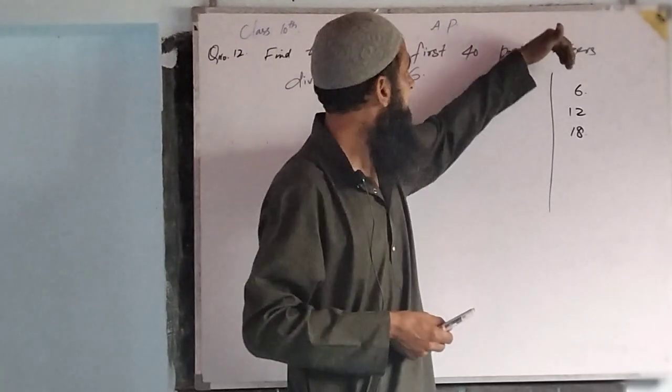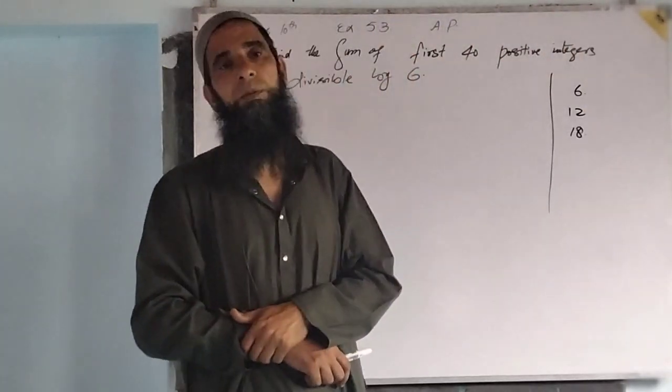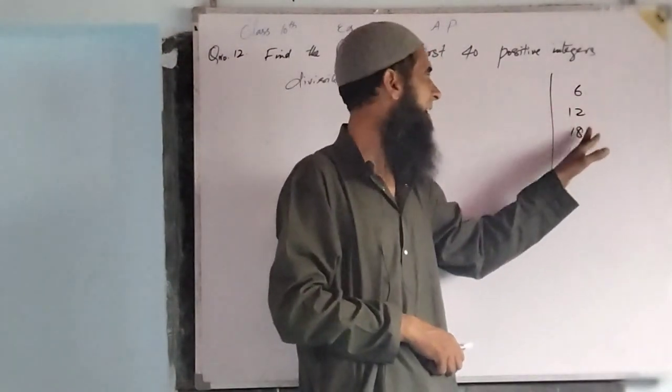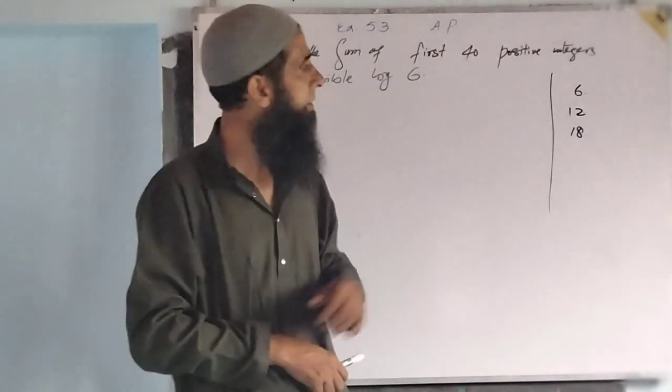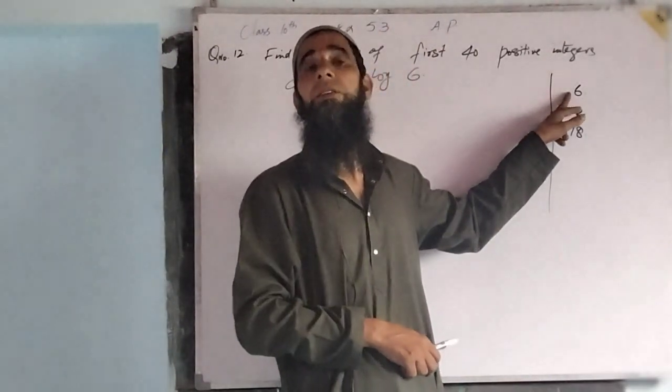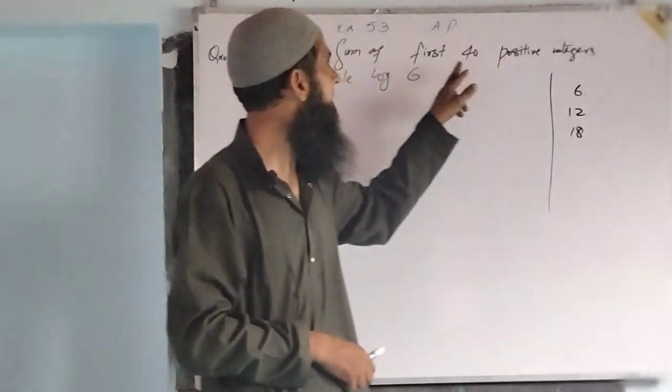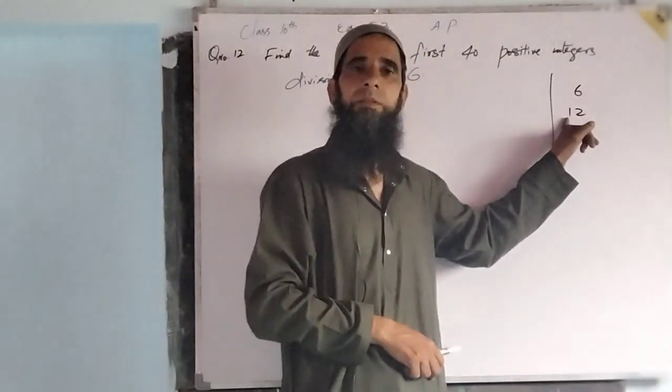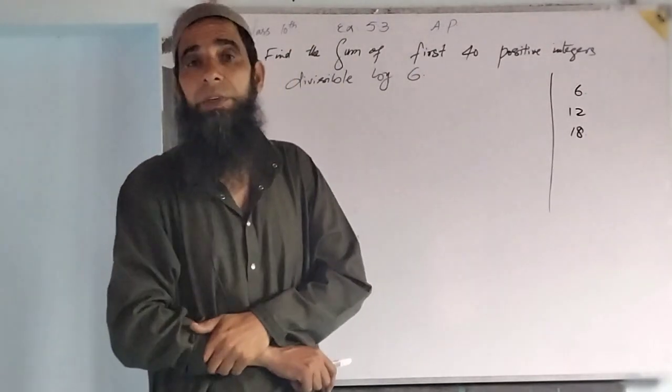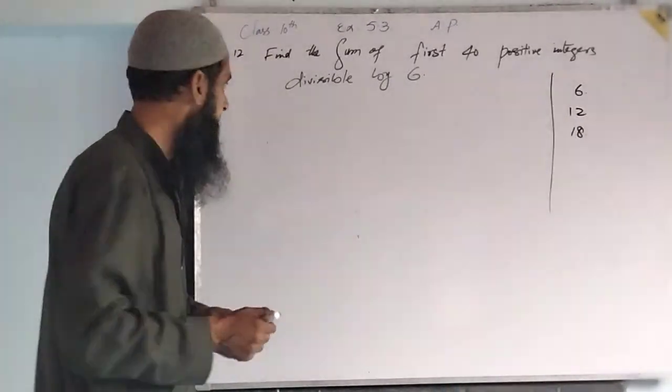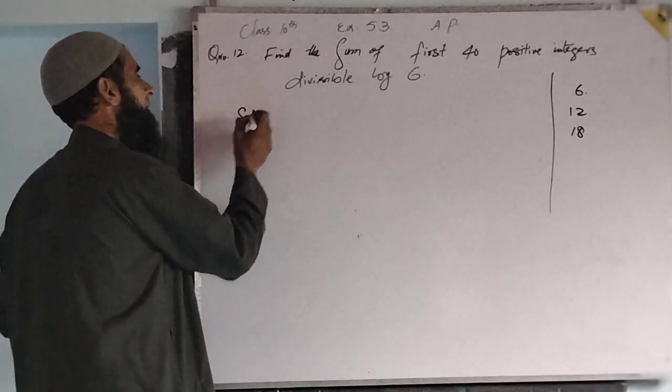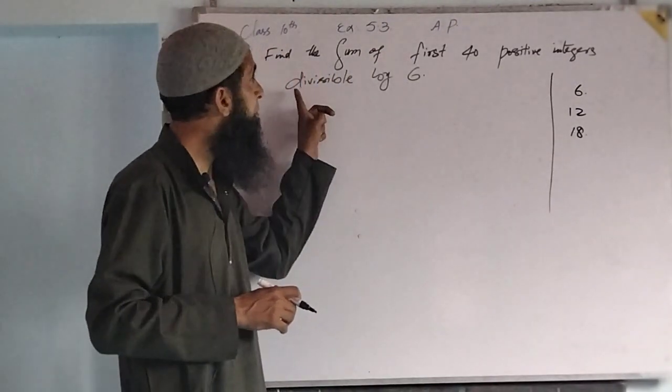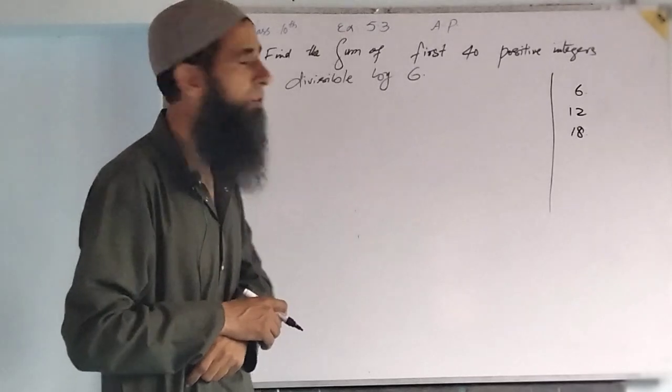If we have the first 40 multiples of 6, that is 6, 12, 18 and so on, we have here this is the first term of the given arithmetic progression which we required from the question. Solution here, dear students, first we take the first 40 positive integers divisible by 6.